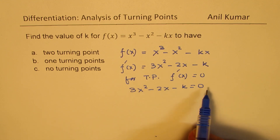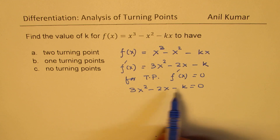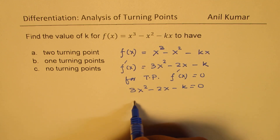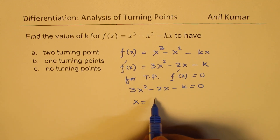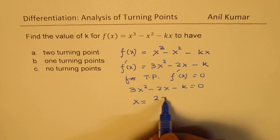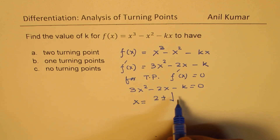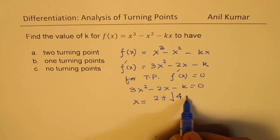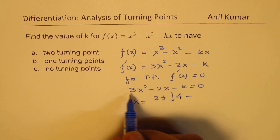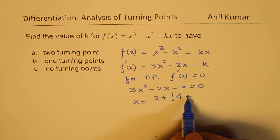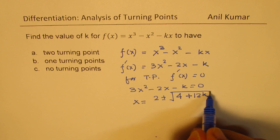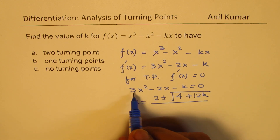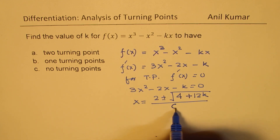To solve this quadratic equation, we can write x equals minus b, which is 2, plus or minus b squared, which is 4, minus 4ac — 4 times 3 is 12, so that's negative, giving plus 12k — all divided by 2 times 3, which is 6.